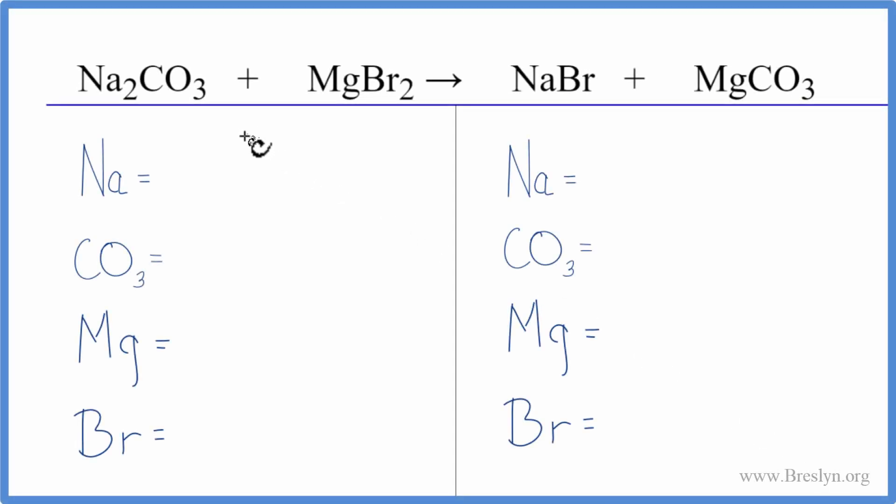To balance this double displacement reaction we'll count the atoms up on each side of the equation. We have two sodium atoms, and then we're going to count this carbonate as just one thing because we have it here and here. That's a useful technique when dealing with these double displacement reactions.